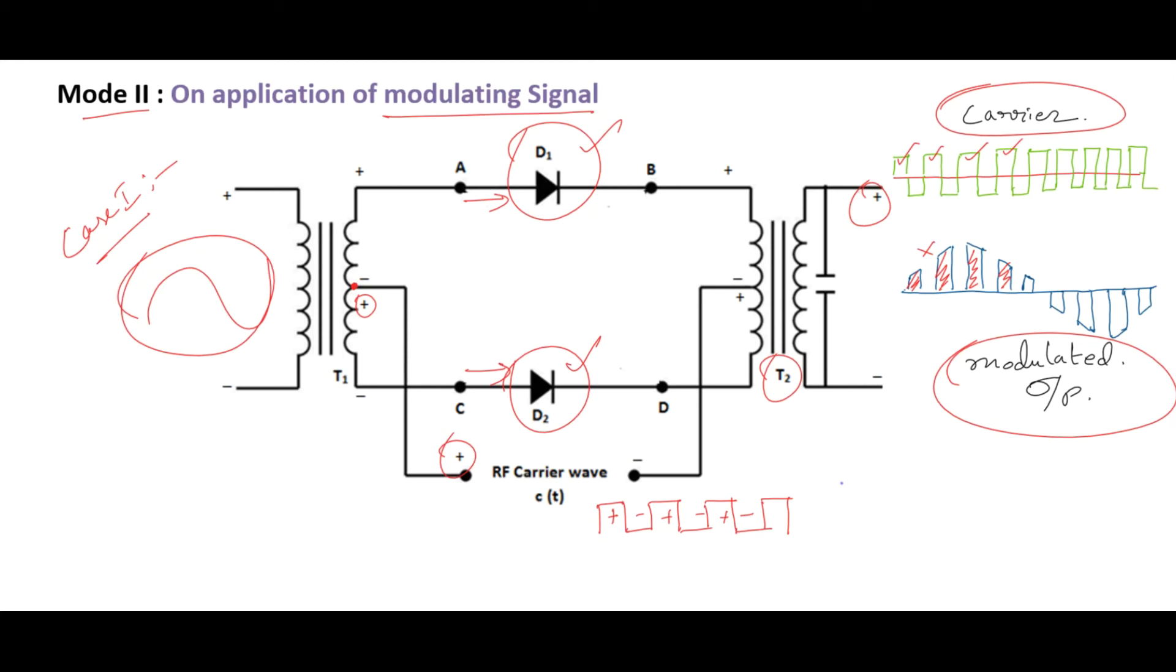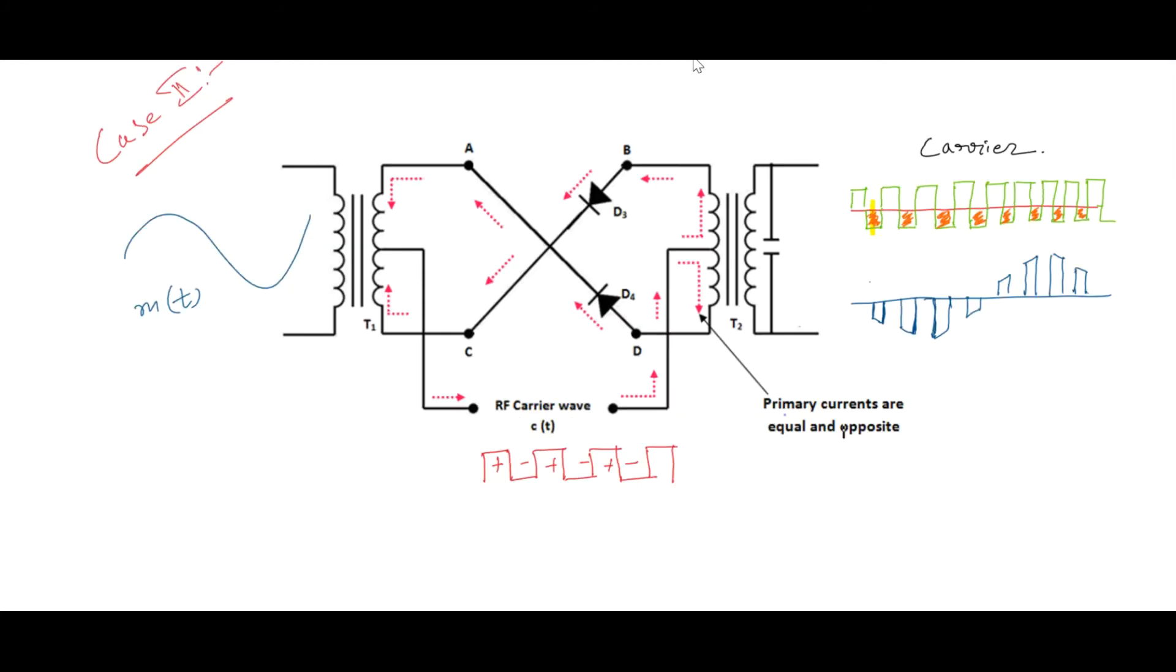For understanding of that, let's move on to Case 2. Now for Case 2, the message signal will remain as it is. D1 and D2 are open circuited, while D3 and D4 are conducting. Obviously, the positive polarity will appear on primary of T2 and negative will appear on secondary of T1. This will result in negative to appear on top end of secondary and positive on lower end of the secondary coil.